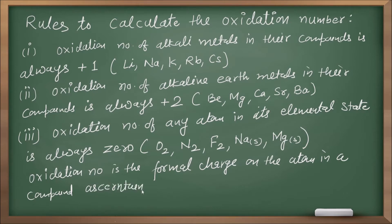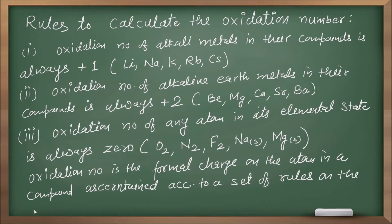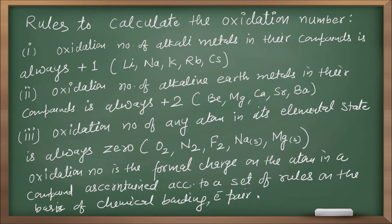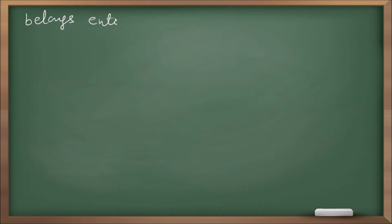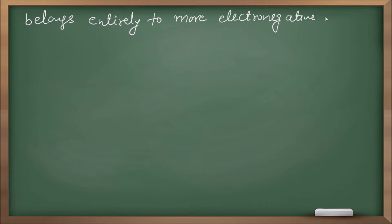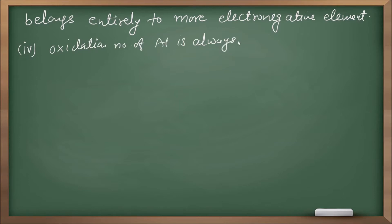The oxidation number is assigned according to a set of rules, on the basis of chemical bonding. The electron pair in a covalent bond is considered to belong entirely to the more electronegative element. Oxidation number of aluminium is always plus three in its compounds.